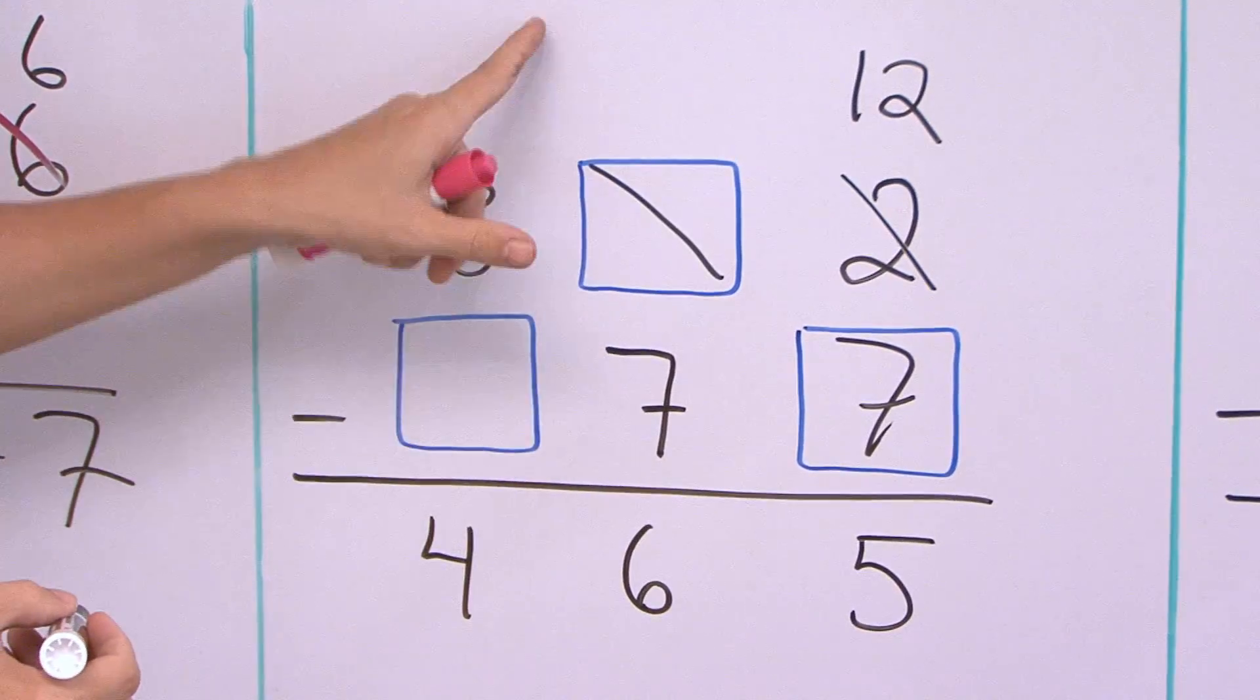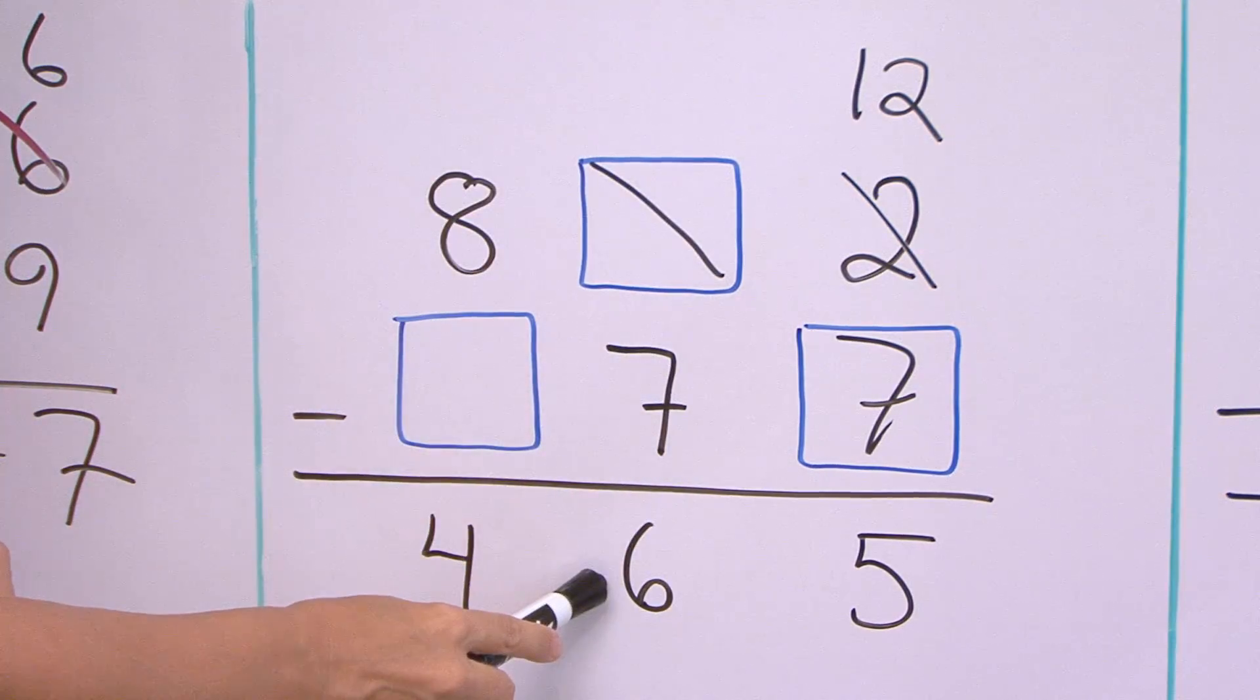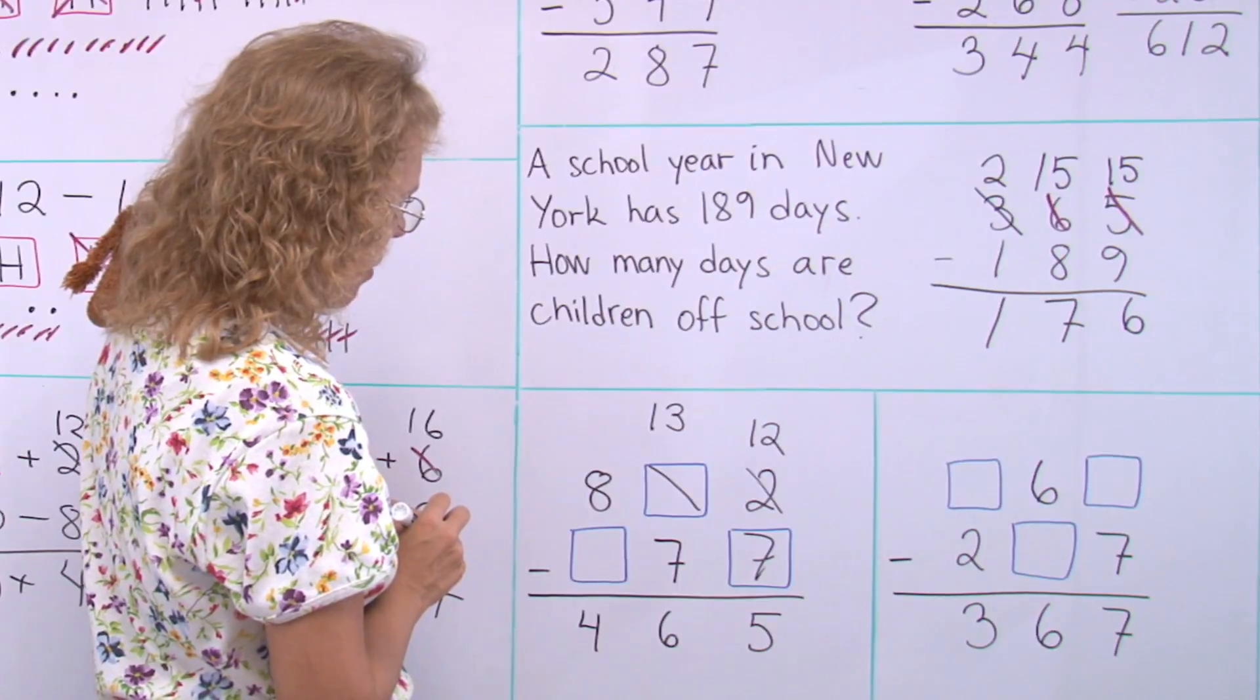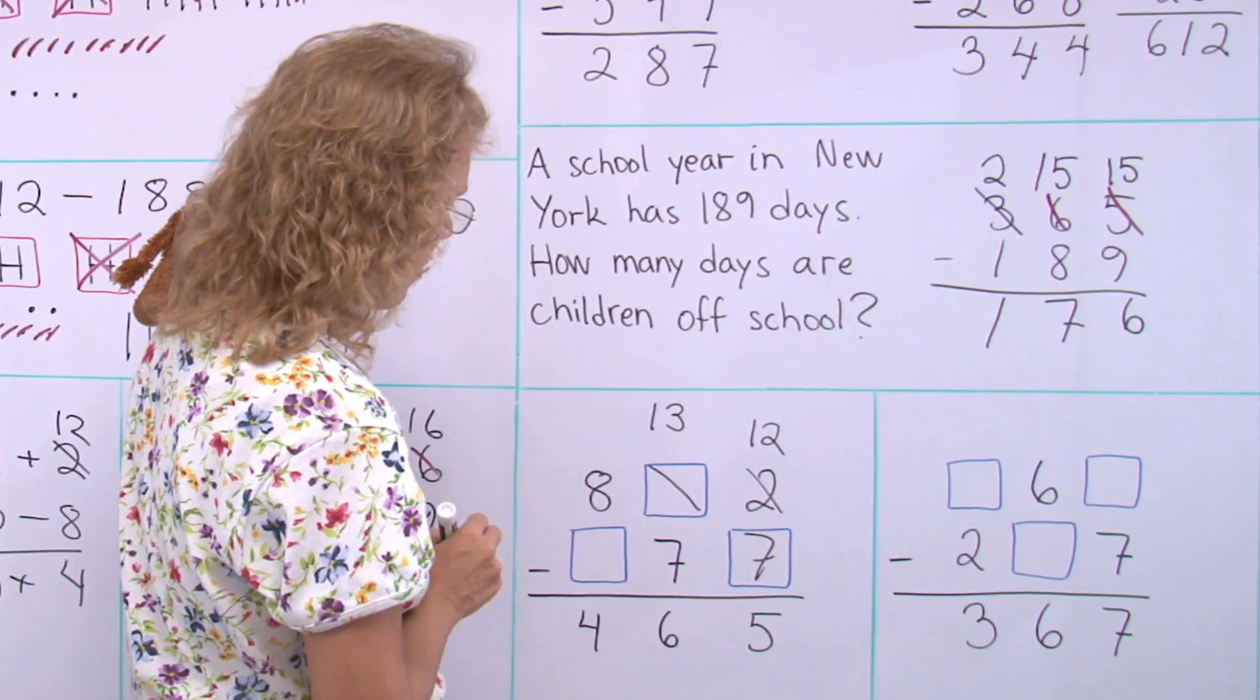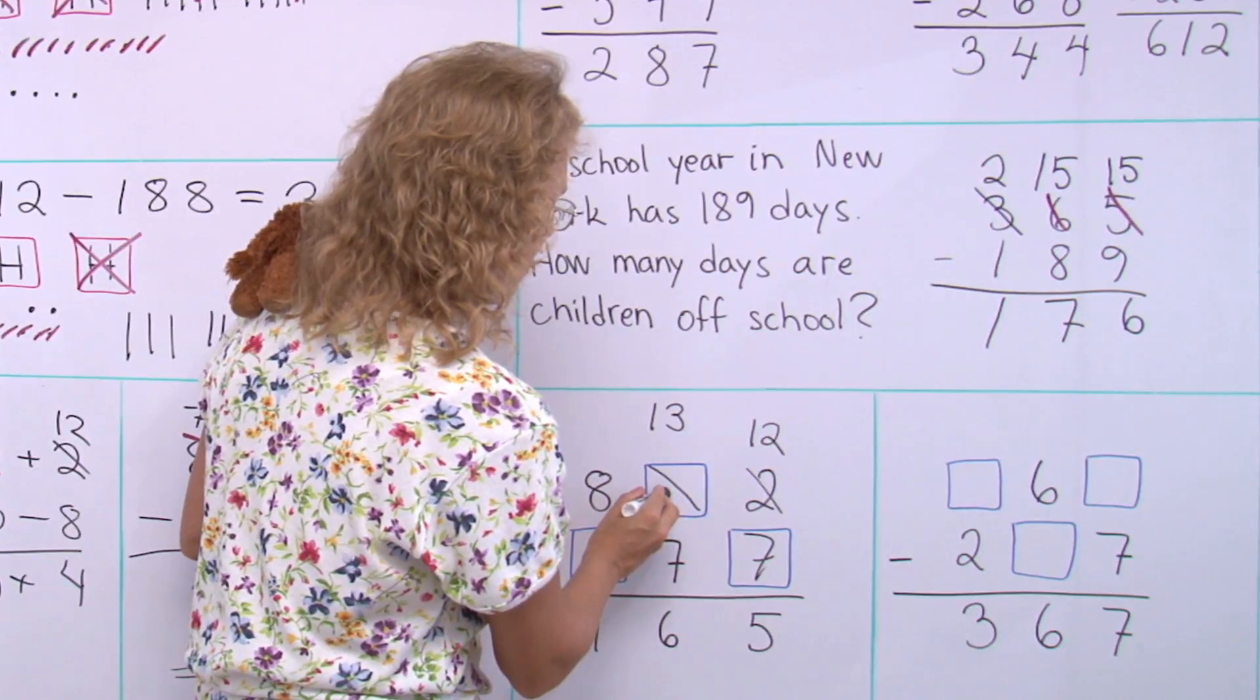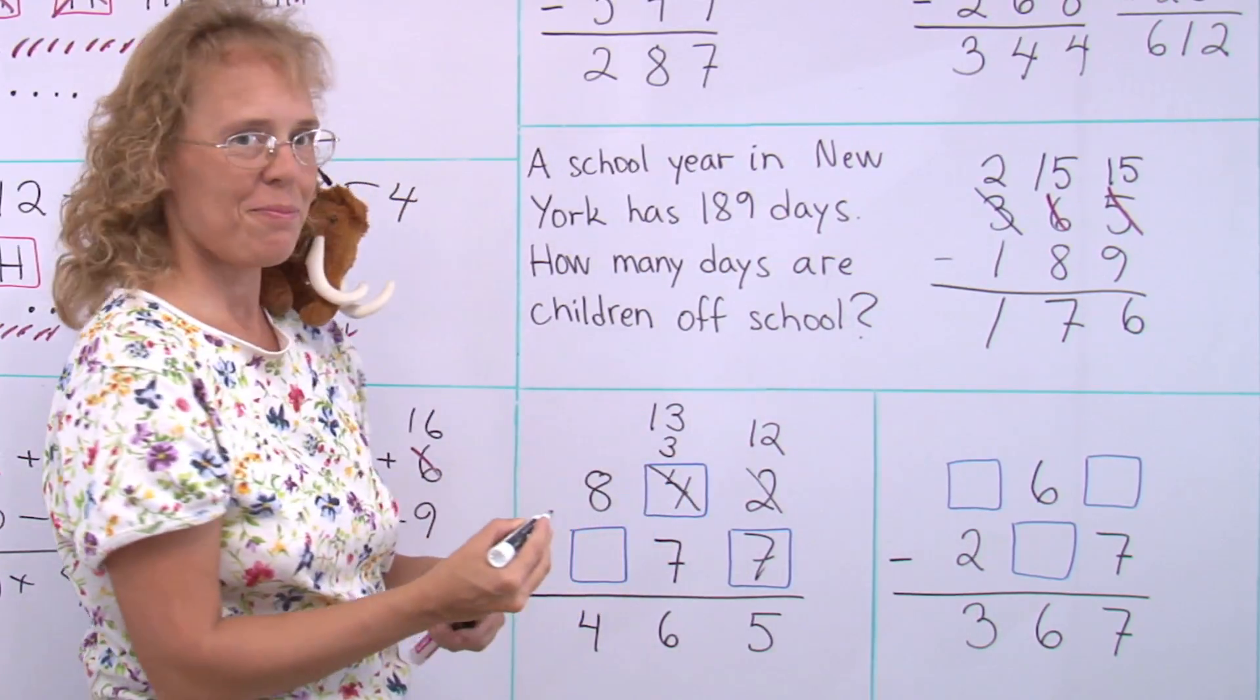How about this one here? In the end, when they subtracted, they got something minus seven equals six. So in the end, they must have had thirteen here. But, what was there? What was it that got crossed out? You see, it was not three here. Because it leaves one less there. It was four here, and then it left three here.